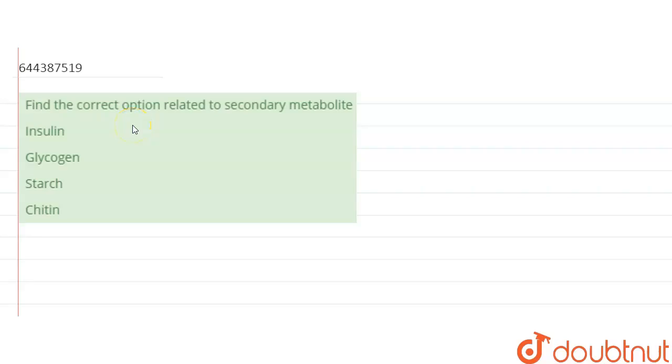Find the correct option related to secondary metabolites. So secondary metabolites are those compounds or products made by organisms which are not required for the growth, development or reproduction.